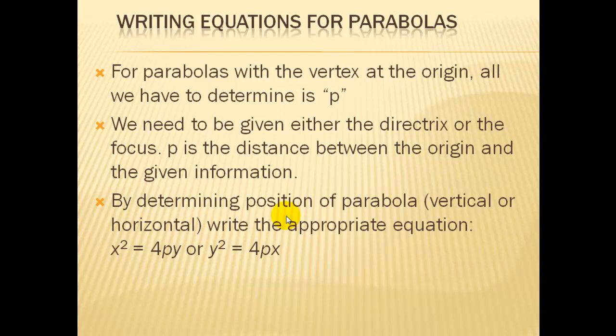Now we want to go the other way. We might be given a graph or given information about a parabola and we want to write its equation. We really only have one form or one number in our template to figure out, and that's the value for p. And we can determine p if we have information about the directrix and the focus. The distance between the focus and the directrix is 2 times p. The distance between the focus and the vertex is p. Or the distance between the vertex and directrix are p. So given pairs of those information, we can determine p. We'll also need to know and figure out whether the parabola is horizontal or vertical so that we plug into the appropriate template.